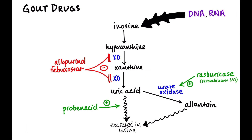Two other gout medications: probenecid increases uric acid excretion. Rasburicase is a recombinant form of urate oxidase, which takes uric acid and converts it into allantoin. Allantoin is highly water-soluble and helps eliminate uric acid without raising the risk of crystal formation in the urine. So urate oxidase converts uric acid into a more excretable form, allantoin.